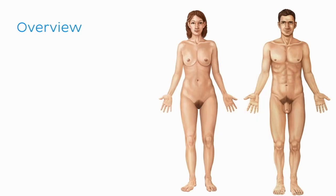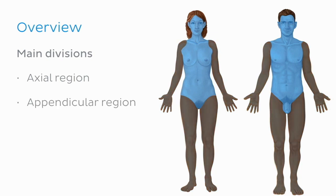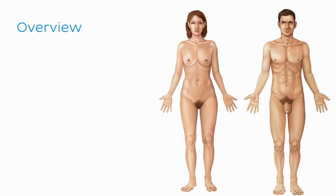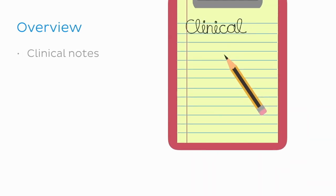Then we are going to look at the two main anatomical divisions of the body, starting with the axial region, followed by the appendicular region. As we go through, we will also take a look at the major divisions of each of these regions. And finally, we'll talk about the relevance of these topics in clinical practice.